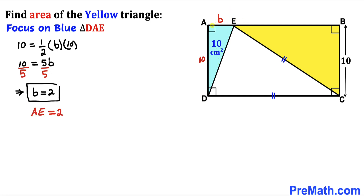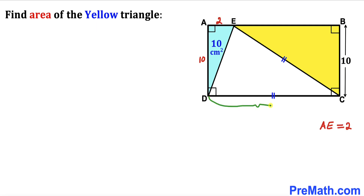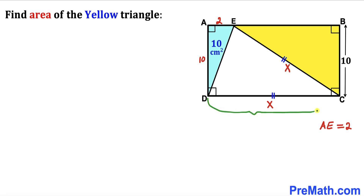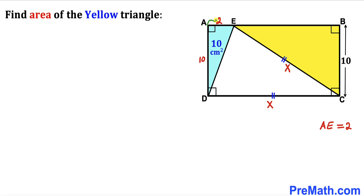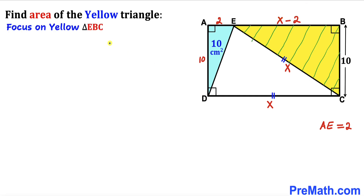So side length AE turns out to be 2 cm. Next, let's assume the other side length of the rectangle is x cm. Since CD equals CE, that side length is also x. Since the full side is x and AE is 2, side length EB must be x minus 2.